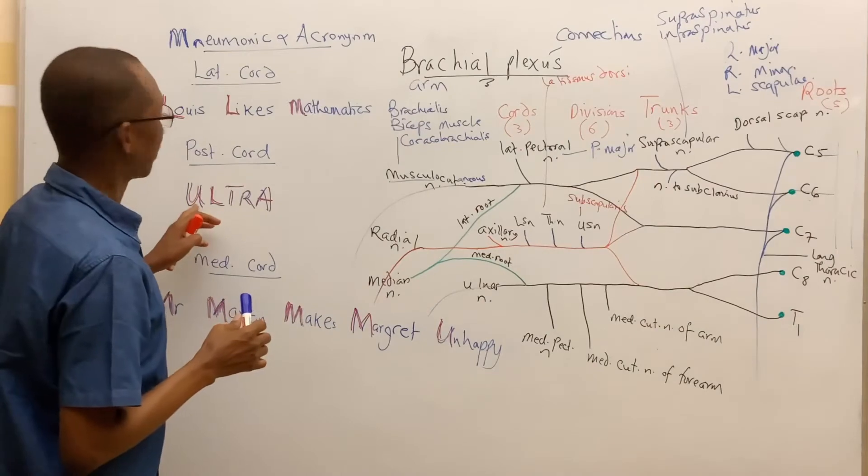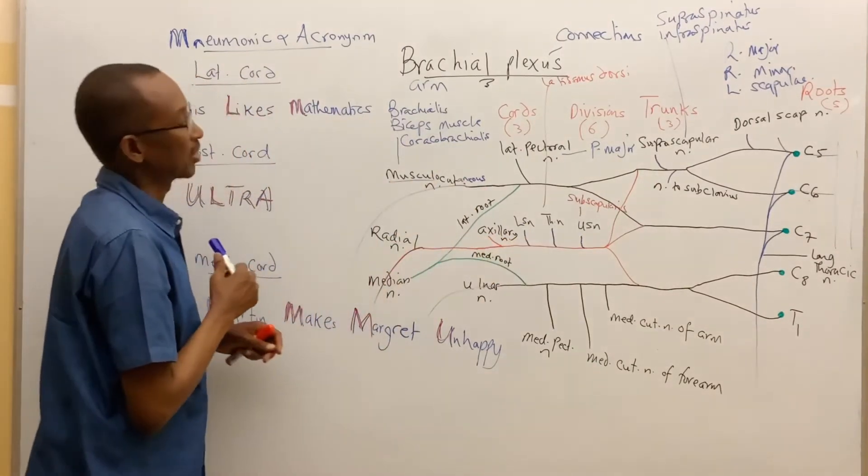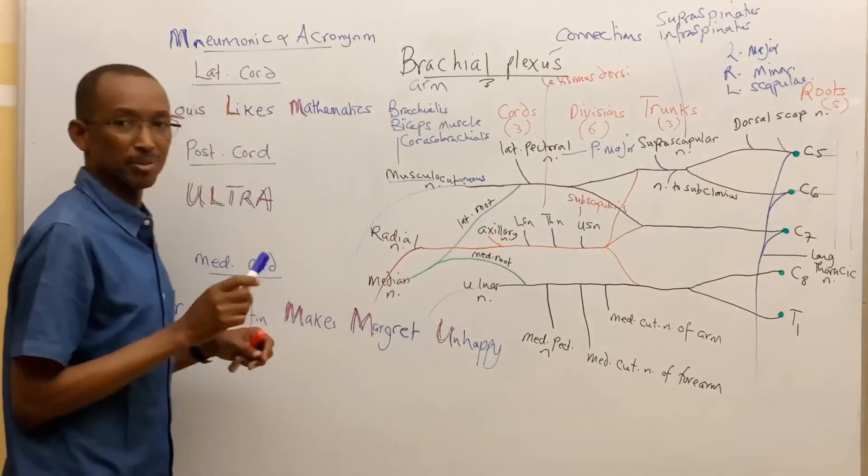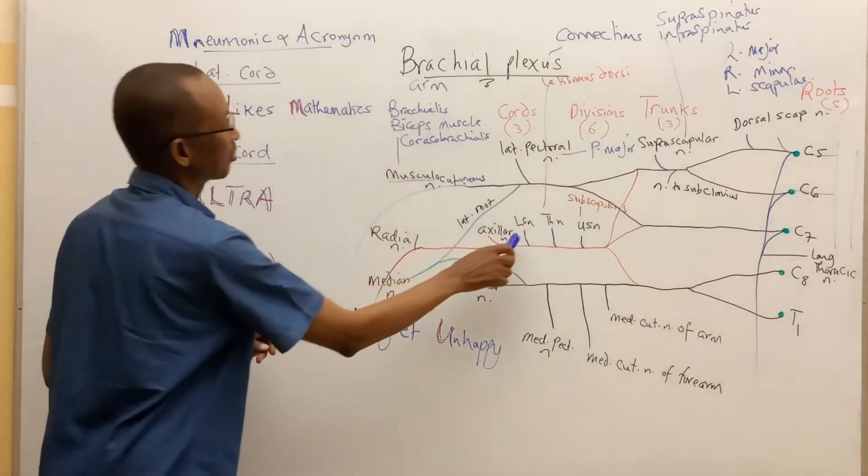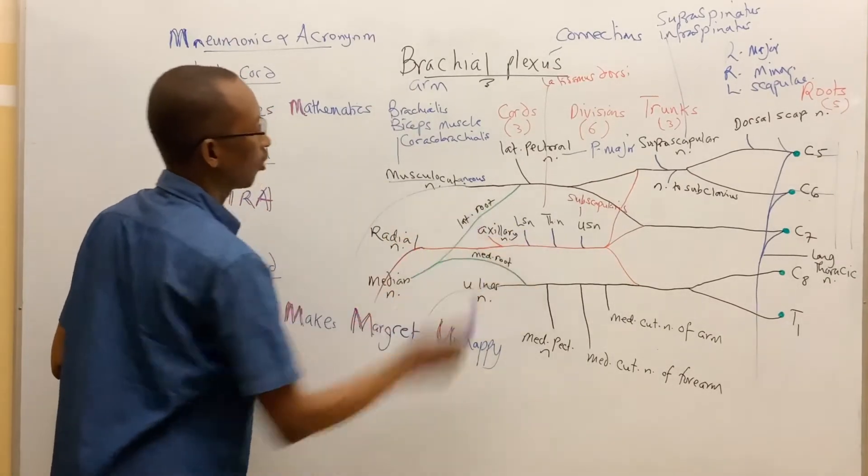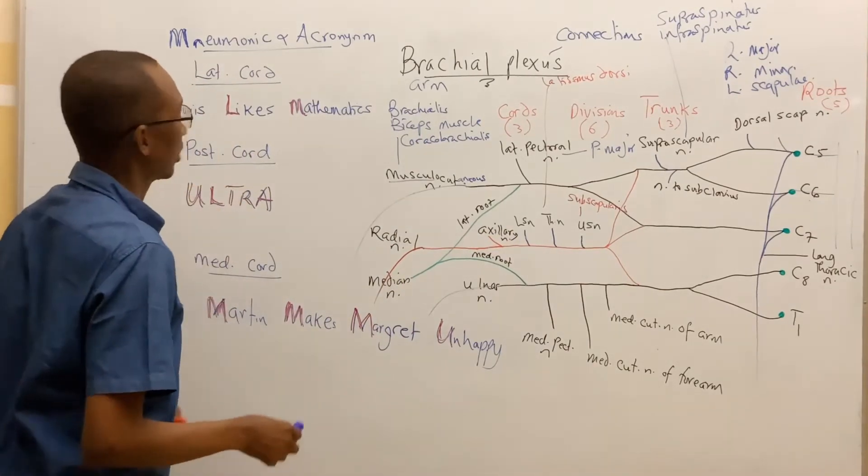If you can remember, I said that upper subscapular nerve supplies subscapularis muscle, lower subscapular nerve supplies the subscapularis muscle and the teres major muscle, and T for the thoracodorsal nerve, which I said supplies the muscles that slide at the back of the thorax.